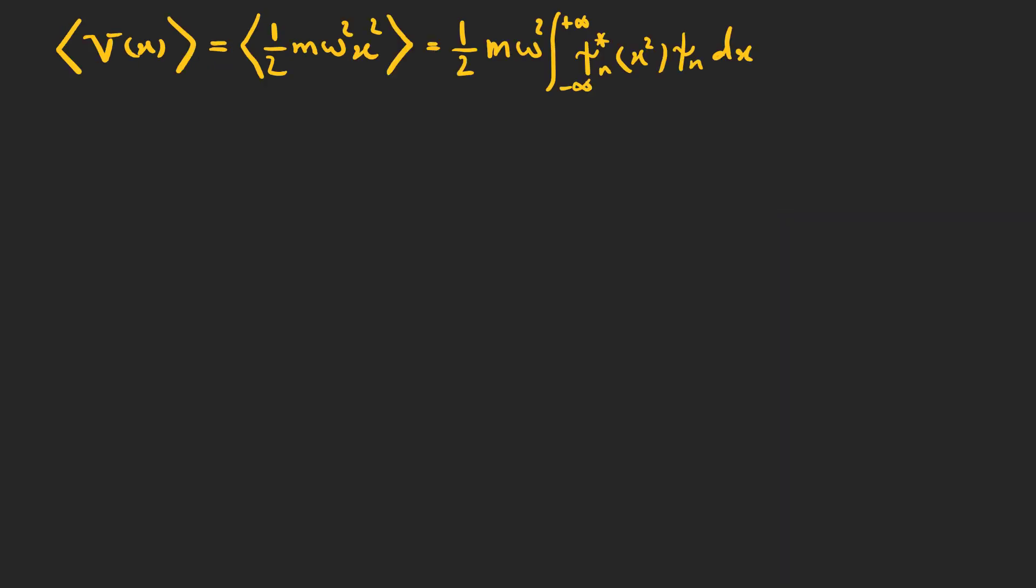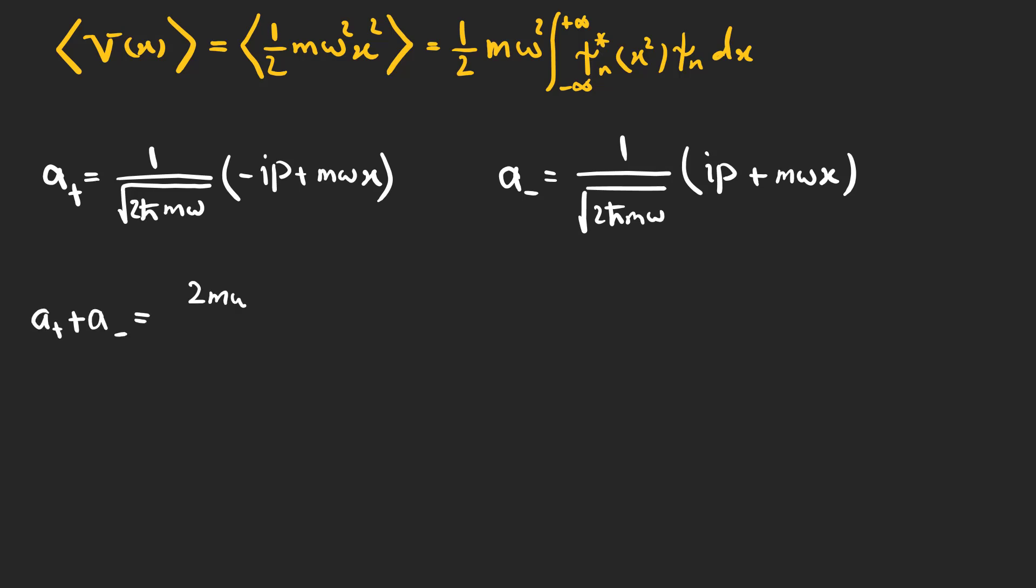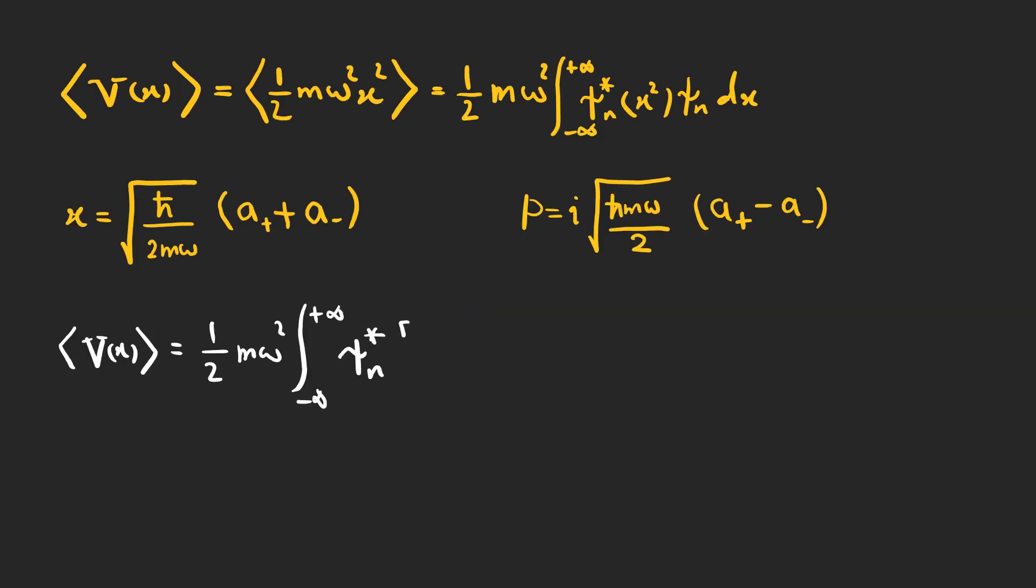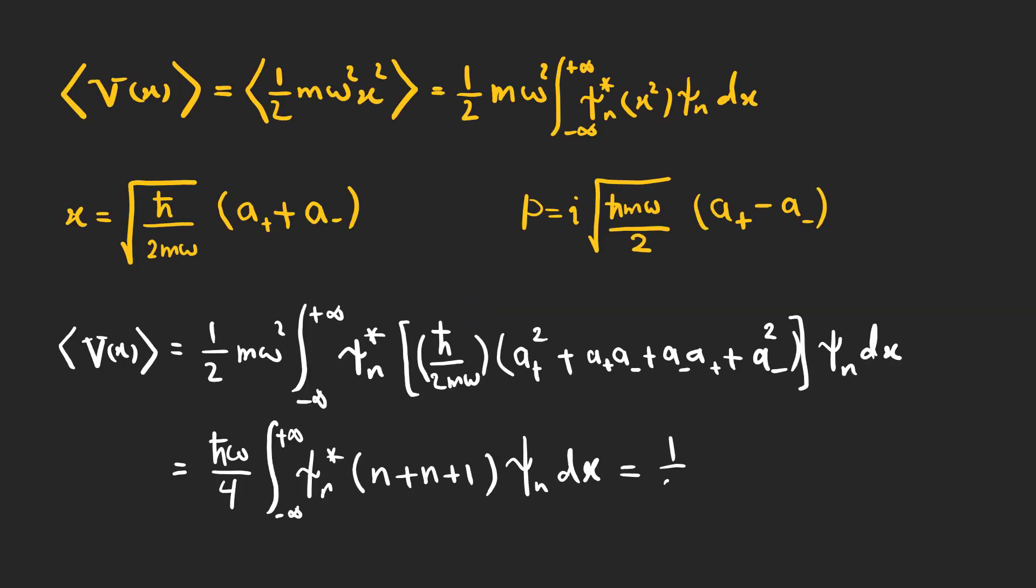As an example, let's find the expectation value of v of x in the nth state. A nice way is to rewrite x and p operators in terms of a plus and a minus. And the expectation value of v of x can be calculated in the nth state.